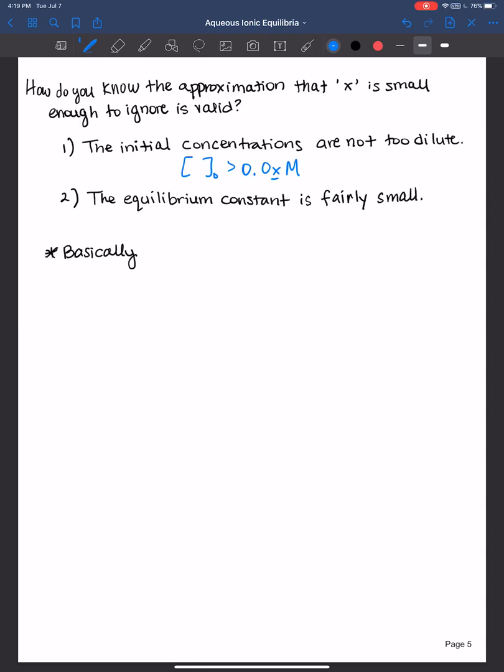And the equilibrium constant needs to be fairly small. So we're looking at K is equal to X times 10 to the negative 5th or to the negative 6th, so on and so forth.